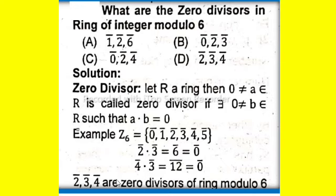Hence, 2, 3, and 4 are the zero divisors of ring modulo 6. So option D is correct, that is 2, 3, 4.